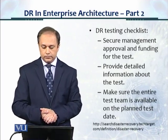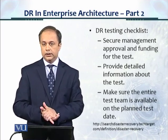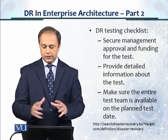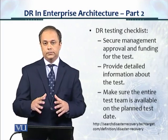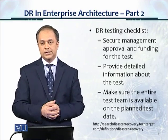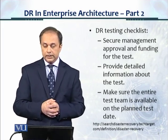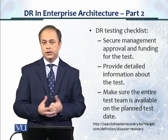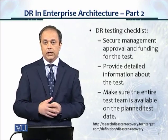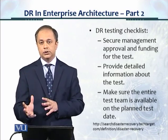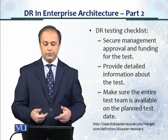DR testing checklist. When we are doing or planning the testing, the following activities need to be in the form of a checklist to make sure everything is done. First, secure management approval and funding for the test — whatever the test mechanism is and however much time it requires, there needs to be approval and management support, financing, and sponsorship. Provide detailed information about the test to all key stakeholders so that they know when the test is going to happen, how long it's going to be, and who the key players are. Make sure the entire test team is available on the planned test date.